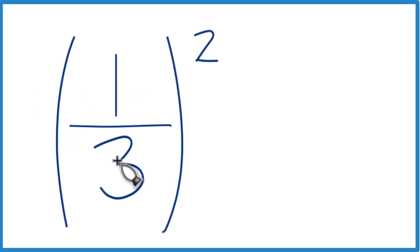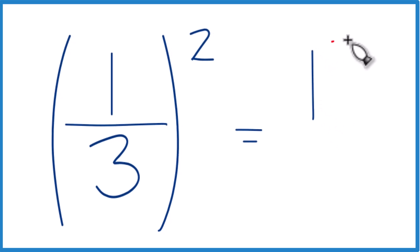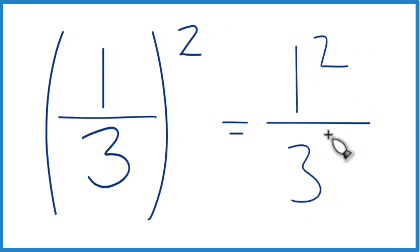So let's take a look at one-third squared. You could call it one-third to the second power. The best way to think about this is one to the second power over three to the second power, or three squared.